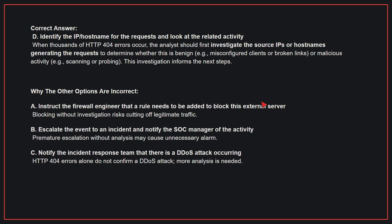Why the other options are incorrect: A — instruct the firewall engineer that a rule needs to be added to block this external server. Blocking without investigation risks cutting off legitimate traffic. B — escalate the event to an incident and notify the SOC manager of the activity. Premature escalation without analysis may cause unnecessary alarm. C — notify the incident response team that there is a DDoS attack occurring. HTTP 404 errors alone do not confirm a DDoS attack; more analysis is needed. Therefore, the correct answer is D.